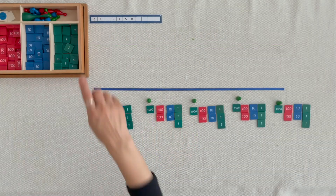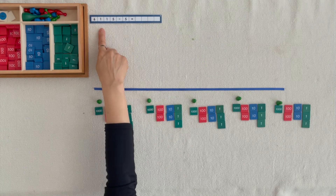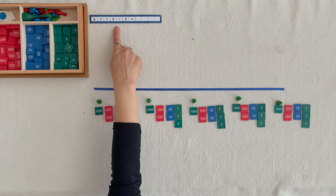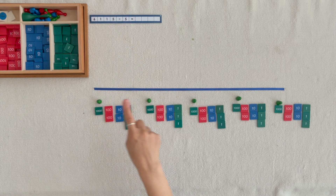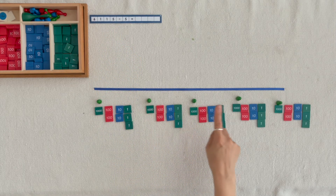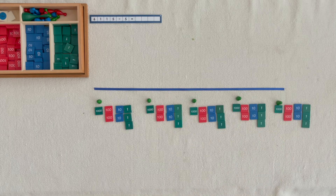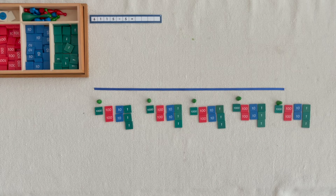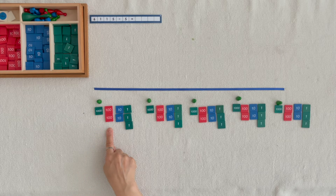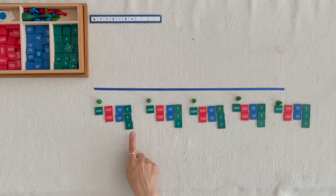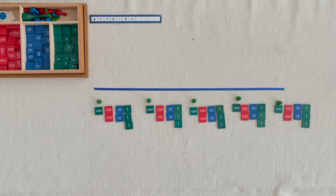We put out 6,100, 1 ten, 5 units and we shared it equally among 5 Skittles. When you counted what each Skittle got, you counted the quotient of 1 thousand, 2 hundreds, 2 tens, 3 units. This operation is called division.